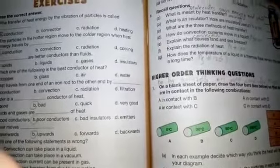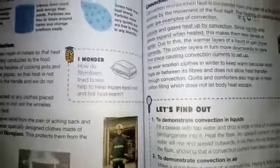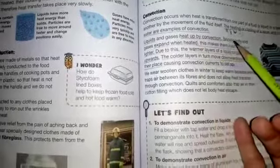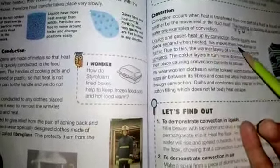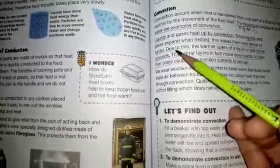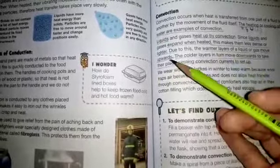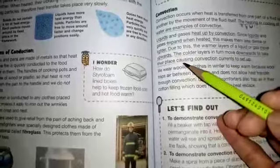The number D is: how do convection currents move in a liquid? The answer is on page number 101. Liquids heat up by convection. Liquids expand when heated, this makes them less dense or lighter. Due to this, the warmer layers of a liquid move upwards. The colder layers in turn move downwards to take their place, causing convection currents to set up.